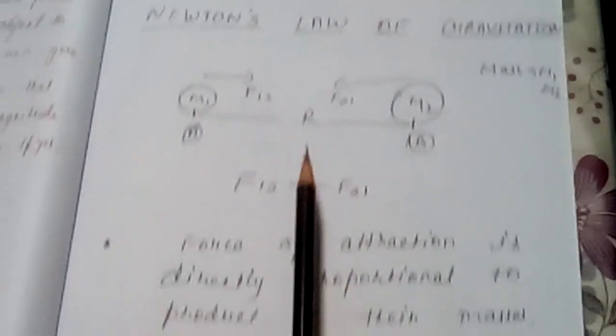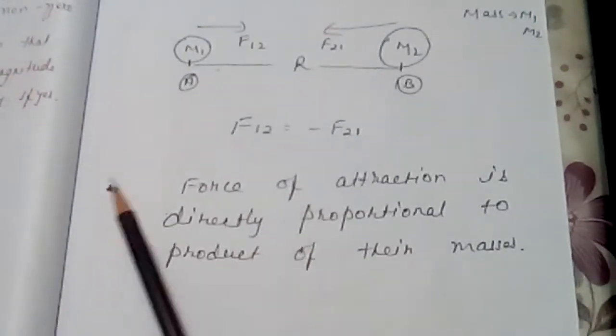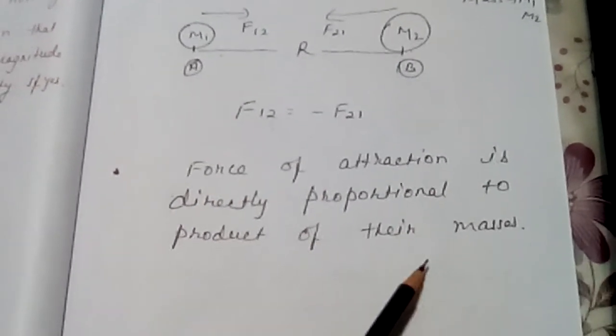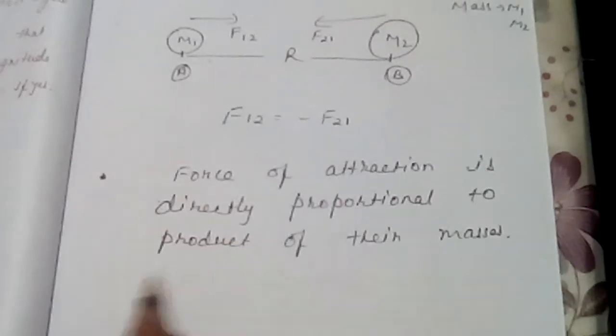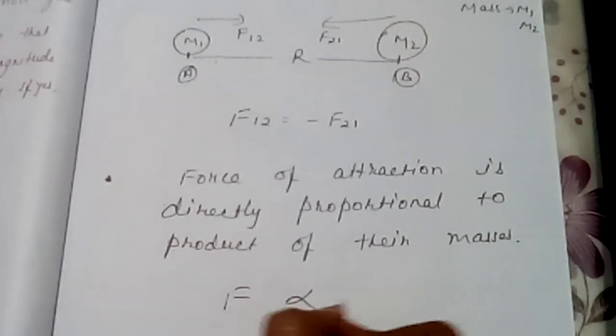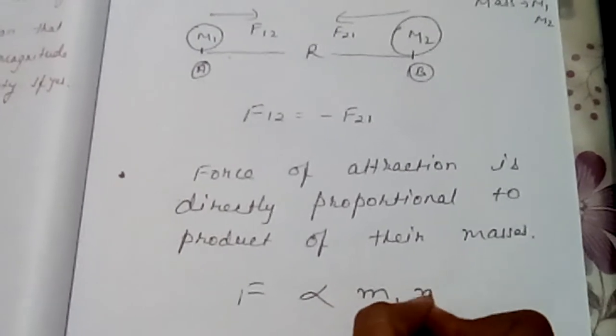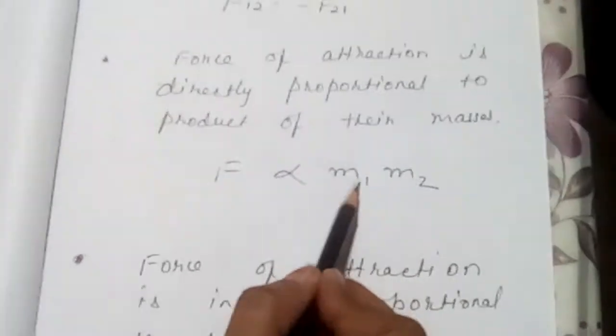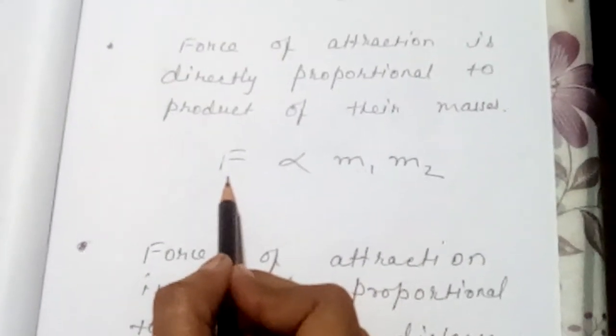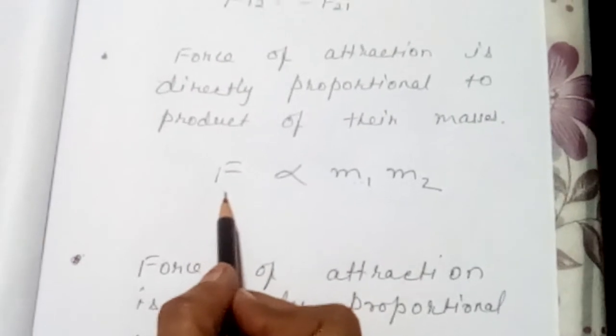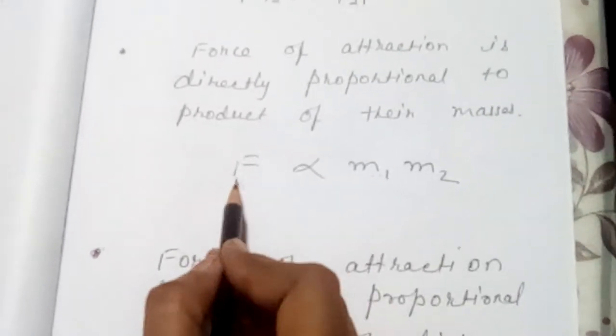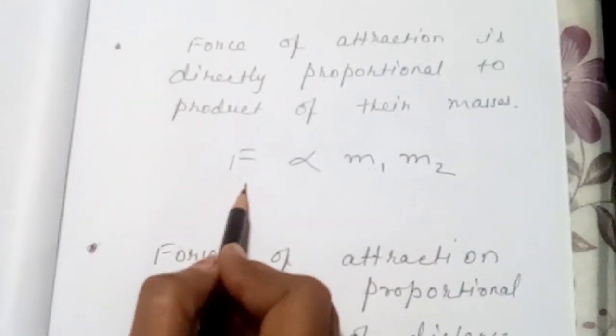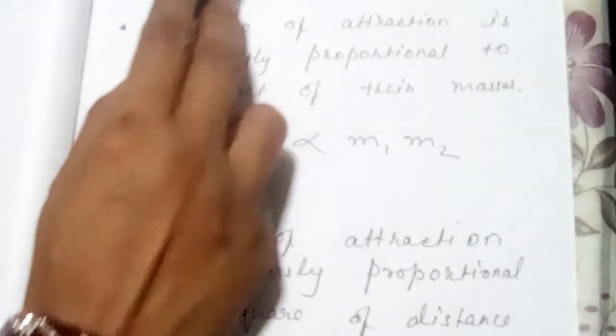So here you see Newton has given a law. First thing: force of attraction is directly proportional to product of their masses. So we can write this force is directly proportional to product of their masses. If M1 increases, force of attraction increases. If M2 increases, force of attraction also increases. That means it is directly proportional.